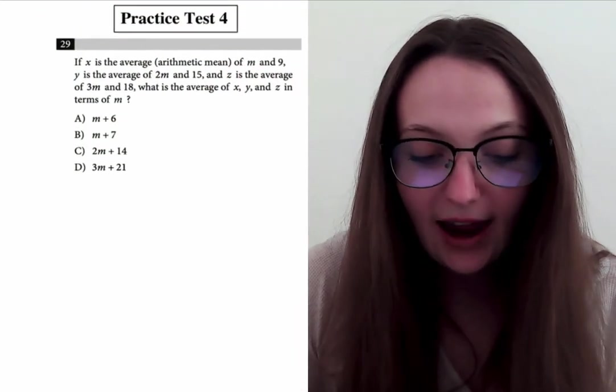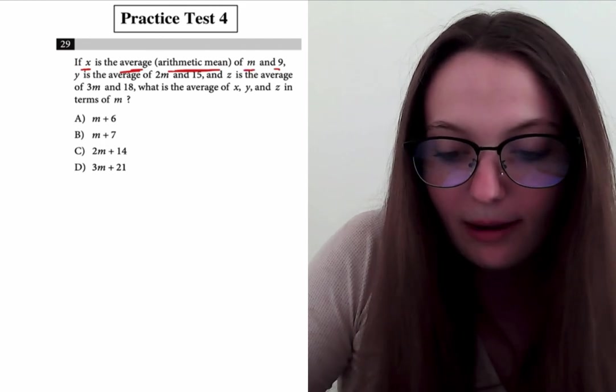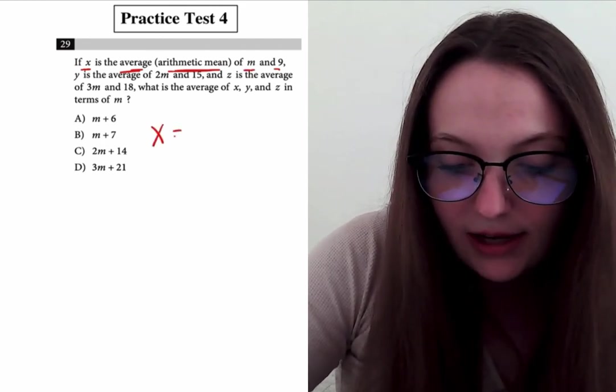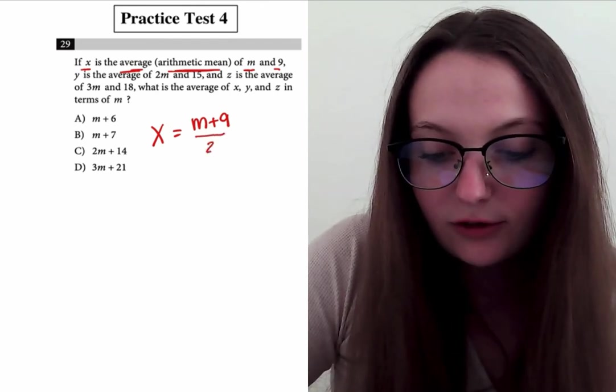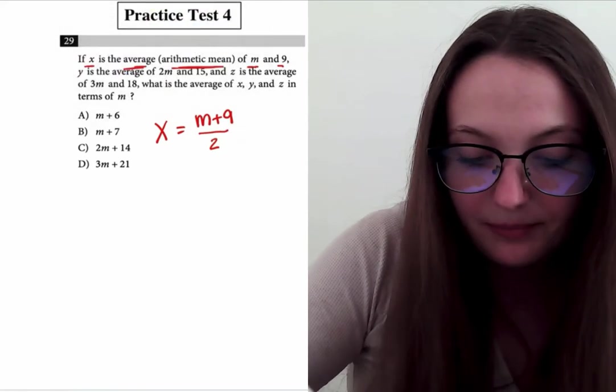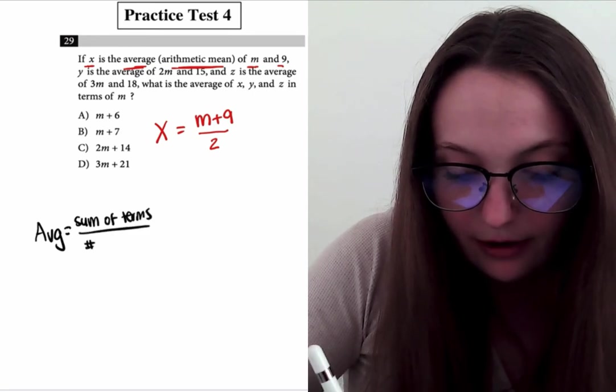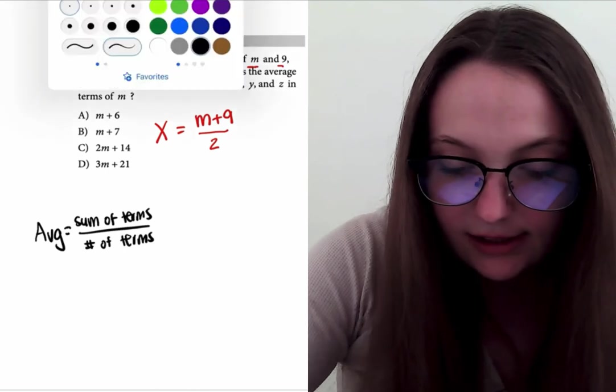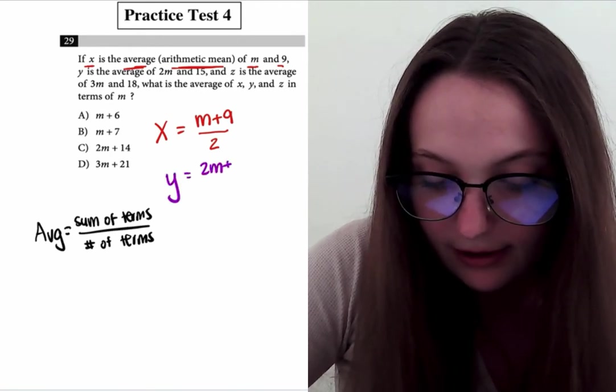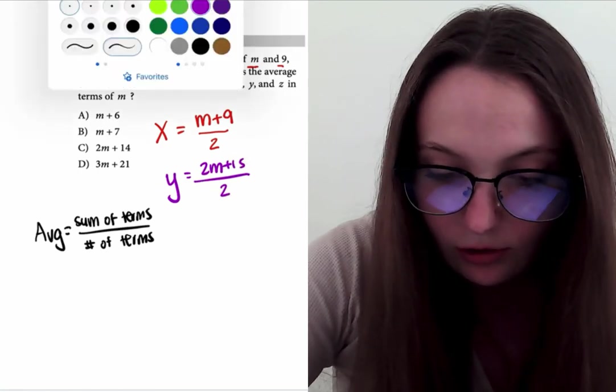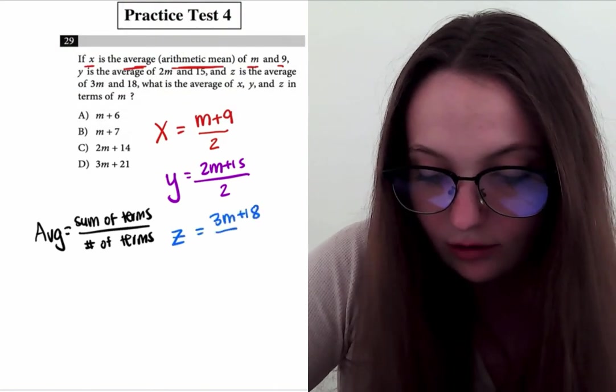For problem 29, it's an average question. They tell us that X is the average, meaning the mean, of M and nine. So that means we can represent X as being M plus nine divided by two. The average is always the sum of terms over the number of terms. Let's continue and represent Y. Y is the average of 2M and 15, so Y equals 2M plus 15 over two. And Z is the average of 3M and 18, also two terms, so divided by two.